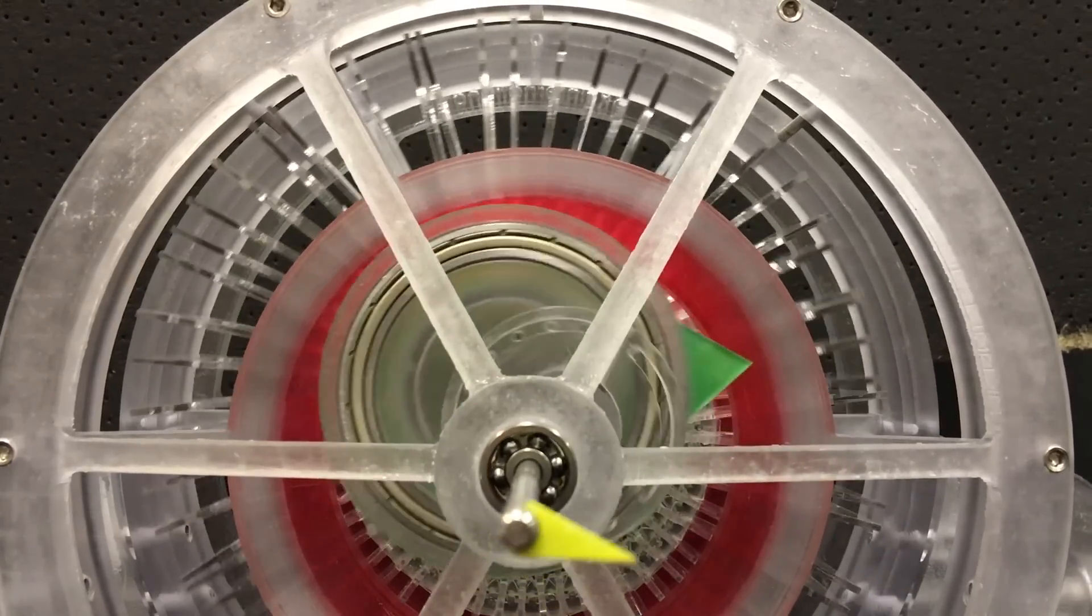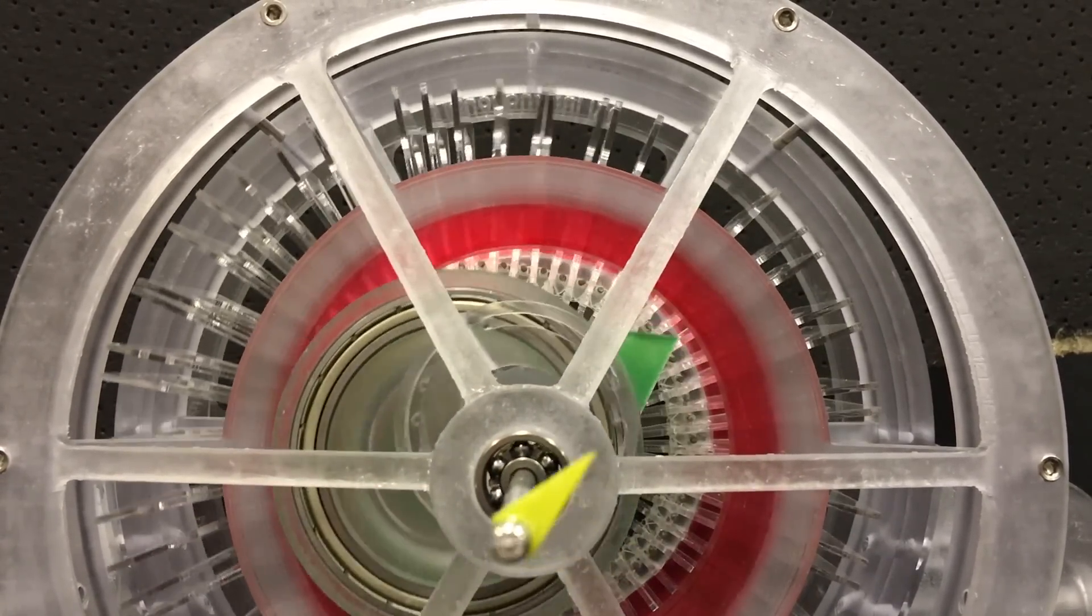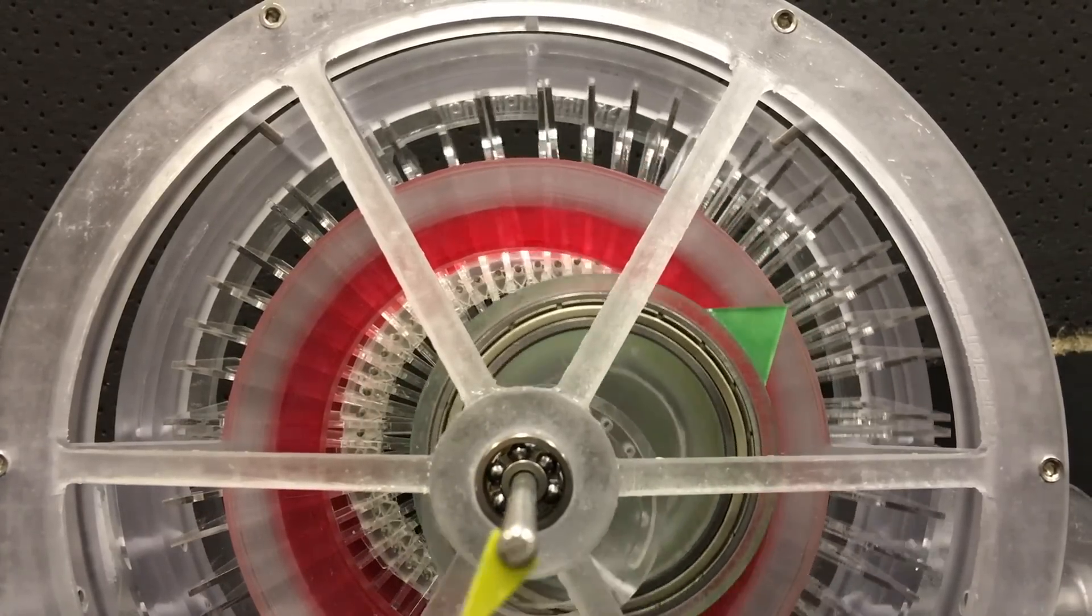What that means in practice is that the input motor can always be spinning in one direction, say clockwise, and the output can be spinning either clockwise or counterclockwise. The output can shift backwards and forwards without any clutches, without any discrete changes in the system. It can do this very smoothly.